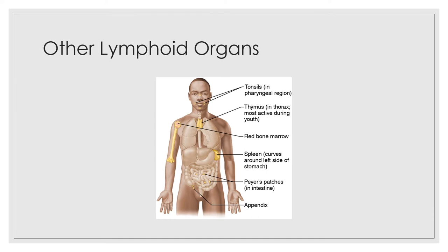The thymus functions at its peak level only during youth and is a lymphoid mass found in the anterior mediastinum overlying the heart. The tonsils are small masses of lymphoid tissue deep in the mucosa surrounding the pharynx. Their job is to trap and remove bacteria or other foreign pathogens entering the throat. They carry out this function so efficiently that sometimes they become congested with bacteria and become red, swollen, and sore — a condition called tonsillitis. Peyer's patches, which resemble tonsils, are found in the wall of the distal small intestine. Lymphoid follicles are also located in the wall of the appendix. The macrophages of Peyer's patches and the appendix are ideally positioned to capture and destroy harmful bacteria commonly occurring in the intestinal system.